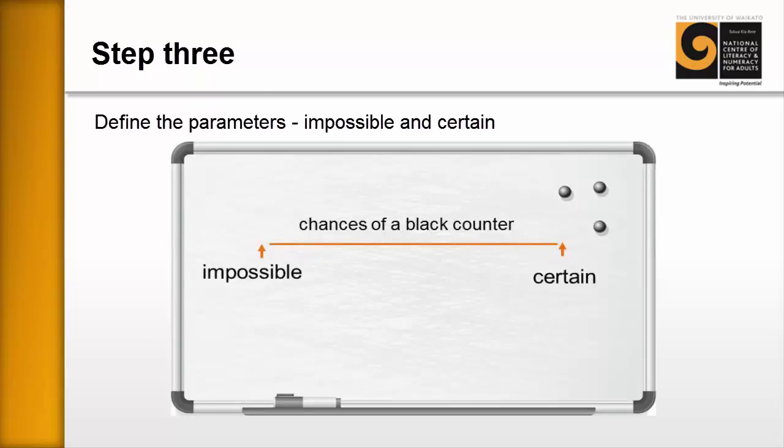Step three, on the whiteboard, write impossible at one end and certain at the other end. These are the chances of pulling out a black counter and everything that we do is going to sit somewhere between impossible and certain.